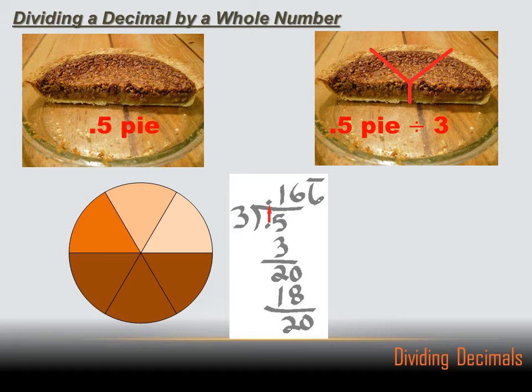Point one-sixth repeating. Each of these slices is point one-sixth of the whole pie. And if we multiply the six pieces in the whole pie by the point one-sixth repeating, we get one or a whole pie.